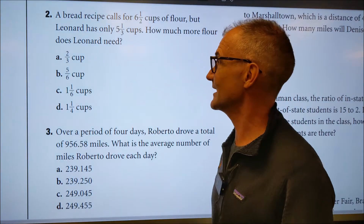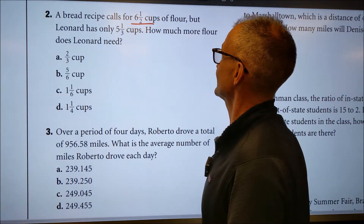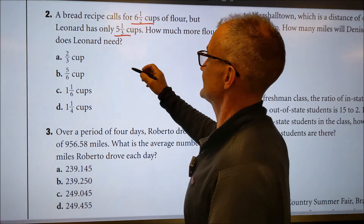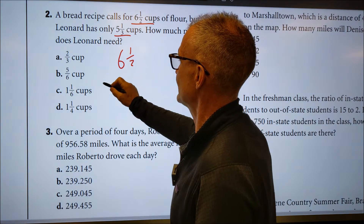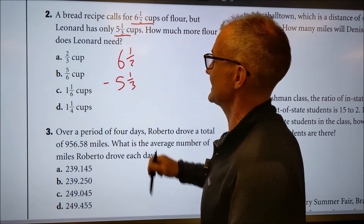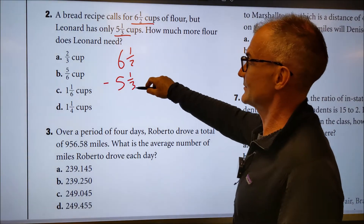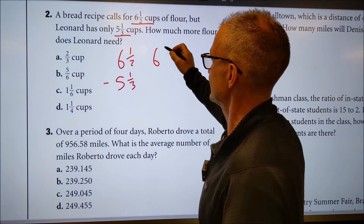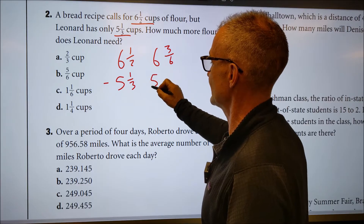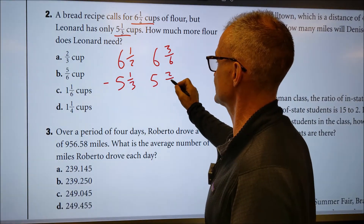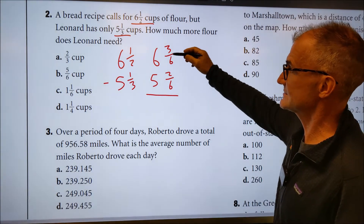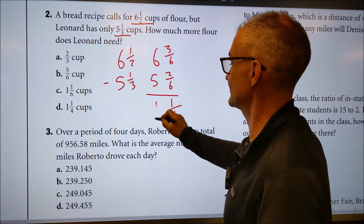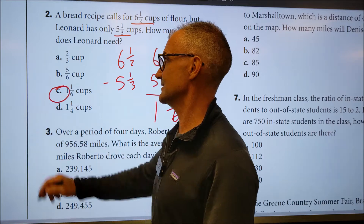Problem number two, also chapter two fractions. A recipe calls for six and a half cups of flour, but he only has five and a third cups. How much more flour does he need? I do six and a half minus five and a third. Common denominator is six: multiply one half by three over three to get three sixths, multiply one third by two over two to get two sixths. Three minus two is one, keep denominator six. Six minus five is one. The answer is one and one sixth — answer C.